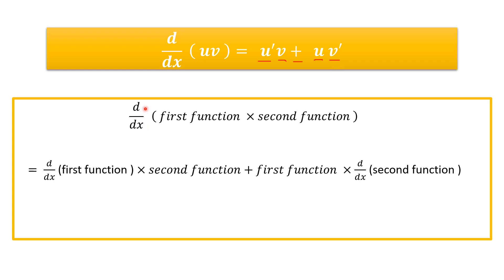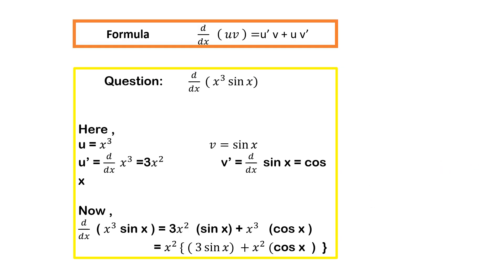It is very simple. The derivative of the product of two functions equals the derivative of the first function multiplied by the second function as it is, plus the first function as it is multiplied by the derivative of the second function. Let us solve some examples to make things more clear. Using this formula — the product rule: d/dx(uv) = u'v + uv'.